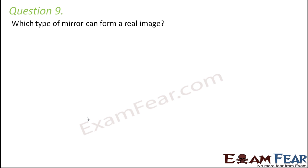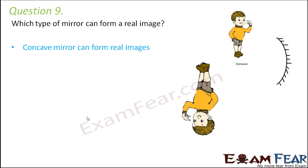Question number nine: Which type of mirror can form a real image? A convex mirror can never form a real image because it always forms virtual images. Only a concave mirror can form real images, and it does so at a number of object locations.